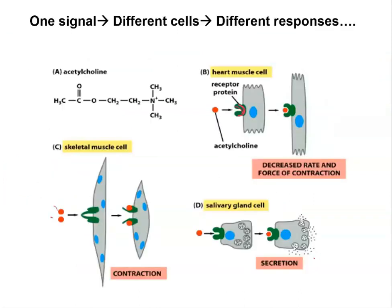One signal can bind to different cells and elicit different responses. For example, acetylcholine is a neurotransmitter released in the synaptic cleft. When it innervates heart muscle, that heart muscle cell is going to relax — we see a decrease in rate and force of contraction. However, the same acetylcholine released onto skeletal muscle causes the opposite: skeletal muscle is going to contract. And here's another example — when acetylcholine binds to the salivary gland, the salivary gland releases via exocytosis little vesicles containing digestive enzymes.